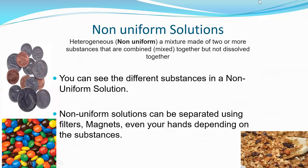Then we have non-uniform solutions, also known as heterogeneous. Non-uniform or heterogeneous solutions are a mixture made of two or more substances that are combined together but are not dissolved together. You can see the different substances in a non-uniform solution. Non-uniform solutions can be separated using filters, magnets, and even your hands, depending on the substance. A couple of examples of a heterogeneous or non-uniform solution would be a pocket full of change, M&Ms, or raisin bran, or some sort of cereal.